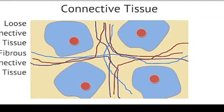Fibrous connective tissue, also called dense connective tissue, is a very strong type of tissue. It is used to attach muscles to bones in the form of tendons, and to attach bones to bones in the form of ligaments. The extracellular matrix of fibrous connective tissue is composed of many fibers of collagen protein. This protein is very strong, allowing it to serve its function.